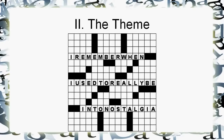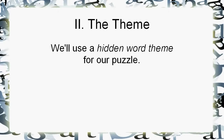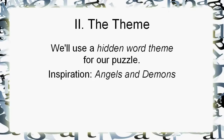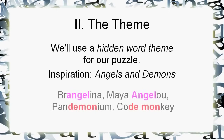So if you can find a theme and break it up into symmetric chunks so it fits into long across entries, then you're good to go. Now there are lots of themes you might have seen, but we're going to use a hidden word theme for our puzzle. The inspiration for this hidden word theme is going to be the book and movie Angels and Demons. All we're going to do is take the word angel and the word demon and hide them in certain phrases — like Brangelina, Maya Angelou (those two have a hidden angel), Pandemonium, and Code Monkey. Notice with Code Monkey, the demon is split across two words — that's actually a good thing. You want to try to make these as fun as possible.